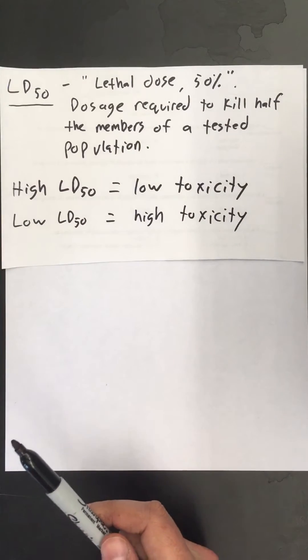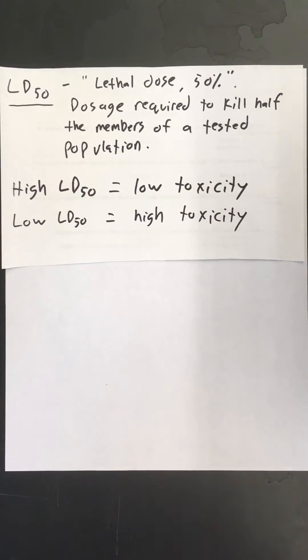So the idea behind this is let's say you were trying to test a substance to figure out how lethal it was. You might test it on a group of mice or rats and you would feed them the substance until about half of them died. At that point we would see what dosage it took to kill 50% of them. That number is what toxicologists use as a baseline and they call it the LD50.